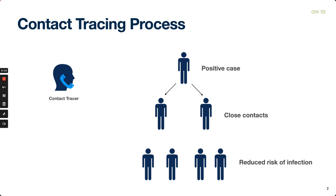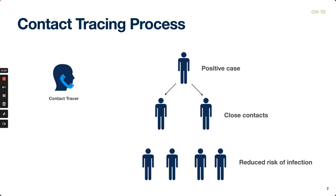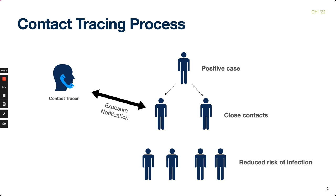According to the CDC, contact tracing is key to slowing the spread of infectious diseases such as COVID-19. The community member who has tested positive is contacted by a contact tracer via phone. During the call, they collaborate to identify anyone the community member has been in close contact with and may have exposed to the virus. Following this, the contact tracer notifies those close contacts of the exposure so that they can isolate and prevent further spread.